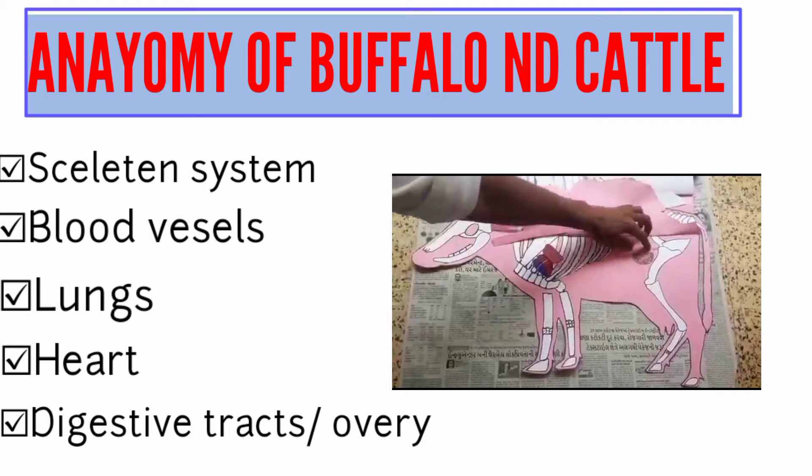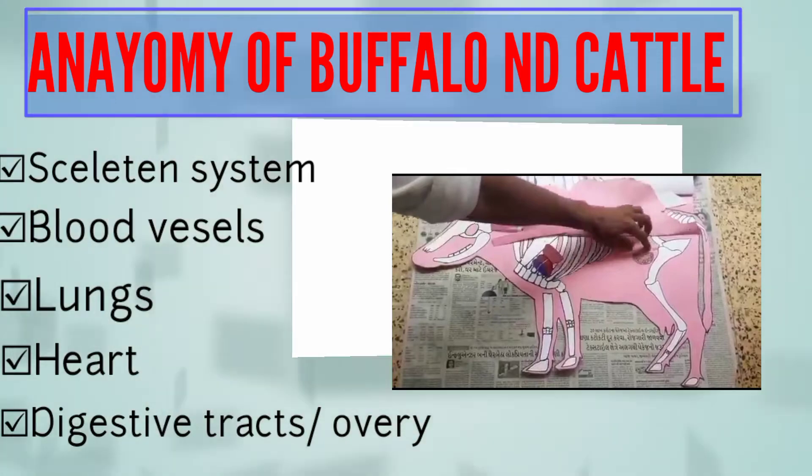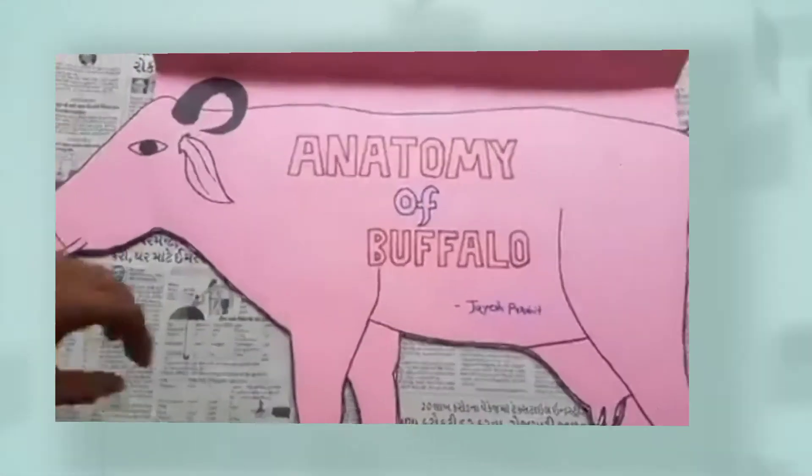In animal anatomy, we will discuss the total skeleton system of different types of animal bodies. We will also discuss joints and their components. Let's start this video.